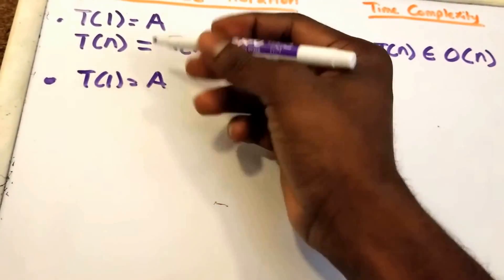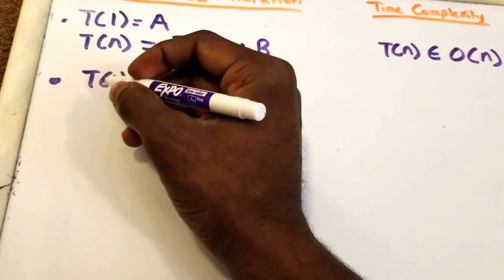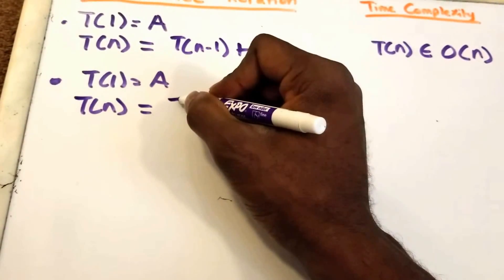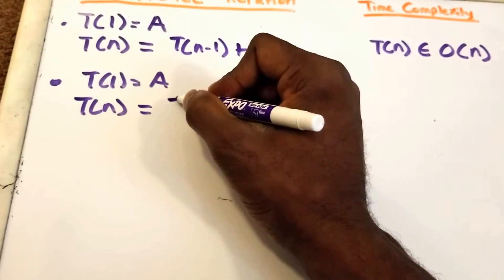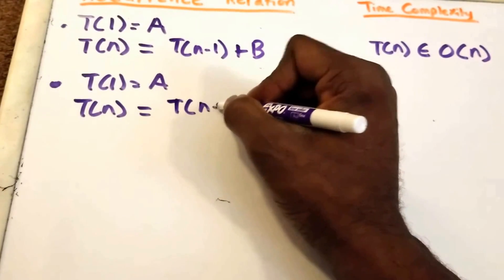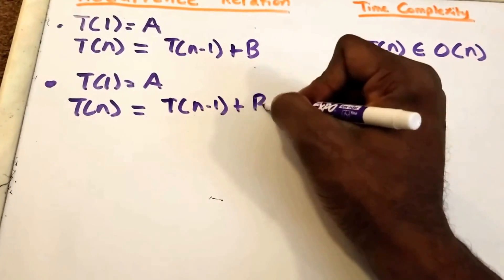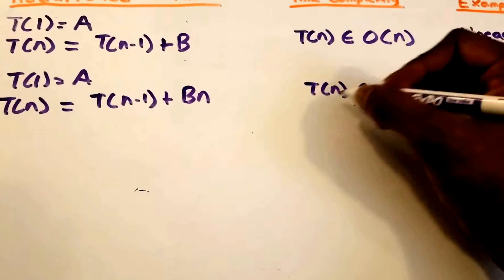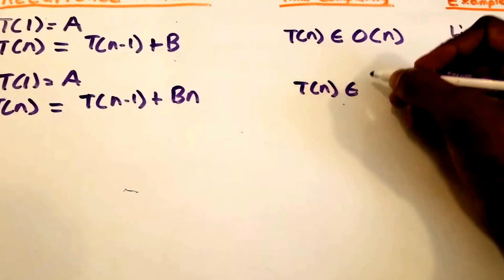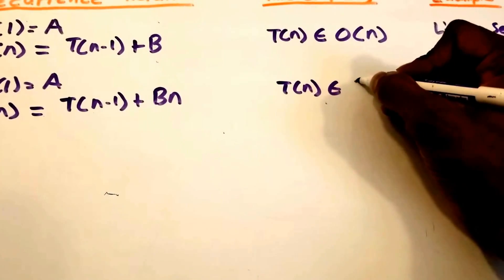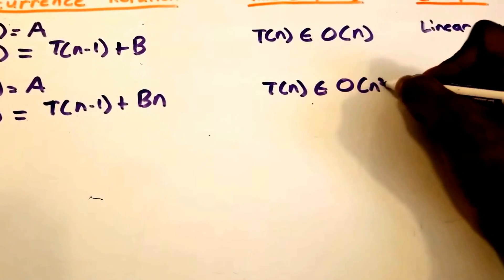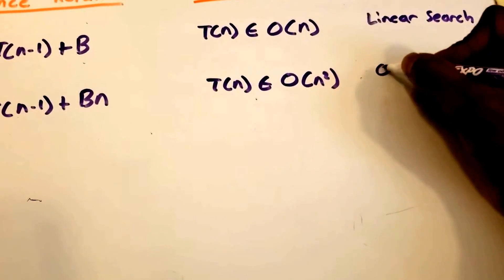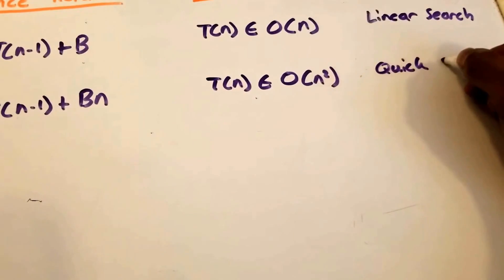Next let's look at another recurrence relation. T(1) = a, where a is a non-negative constant. Then we have T(n) = T(n-1) + B·n. The time complexity for T(n) here would be O(n²), and a good example of this would be the quick sort algorithm.